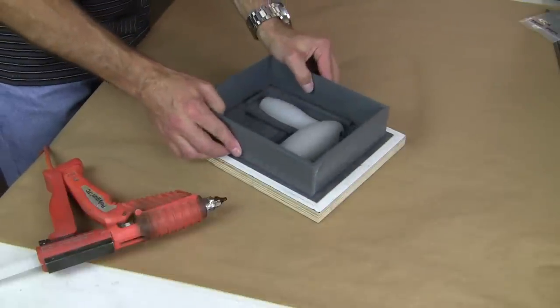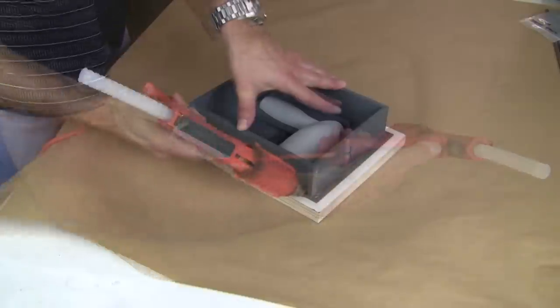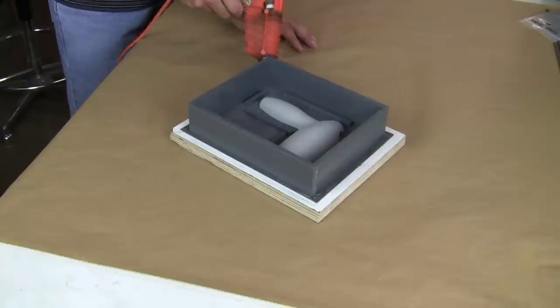The mold box is placed onto the splitter board. The entire perimeter is fastened down with a bead of hot glue, ensuring a complete seal to prevent silicone from leaking out after it's poured.